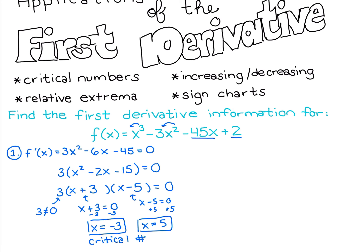So we have our critical numbers -3 and 5. Our second step is to make a sign chart. We'll place those critical numbers on the sign chart and look at the sign of the first derivative. I'll plug into the factored form rather than the polynomial form so I don't even need a calculator to determine the sign.